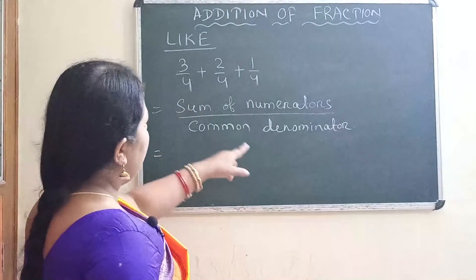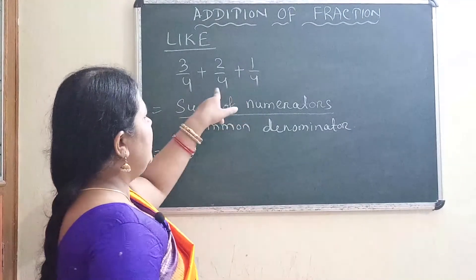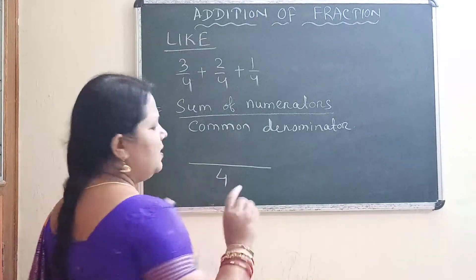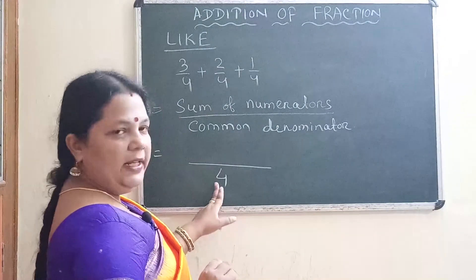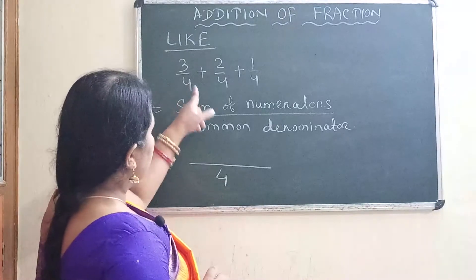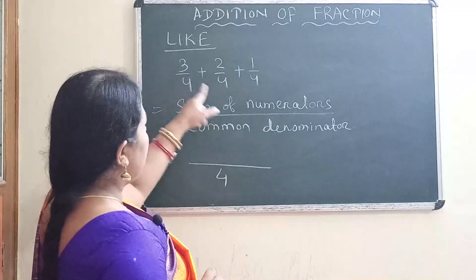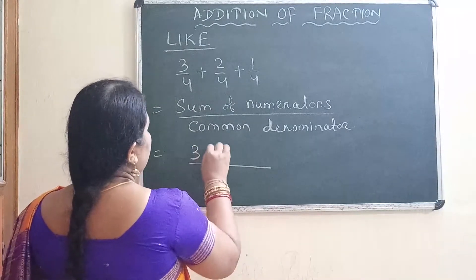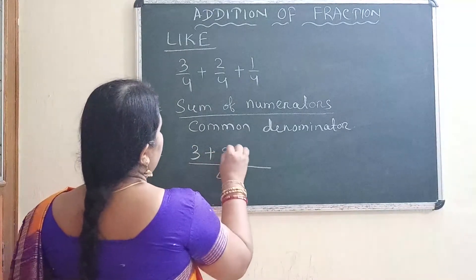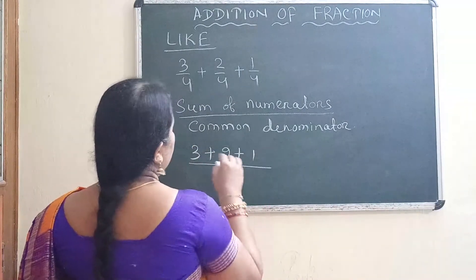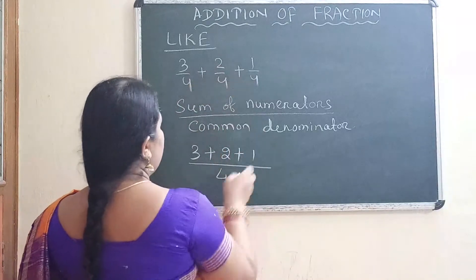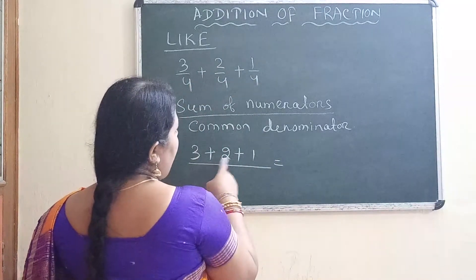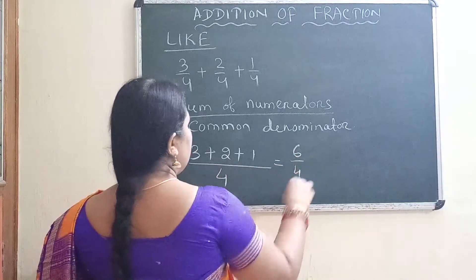The formula for like fractions is: sum of numerators divided by the common denominator. Since denominators are the same, we select just one common denominator — the LCM is only 1. So we find the sum of numerators: 3 plus 2 plus 1. That gives us 6 by 4.